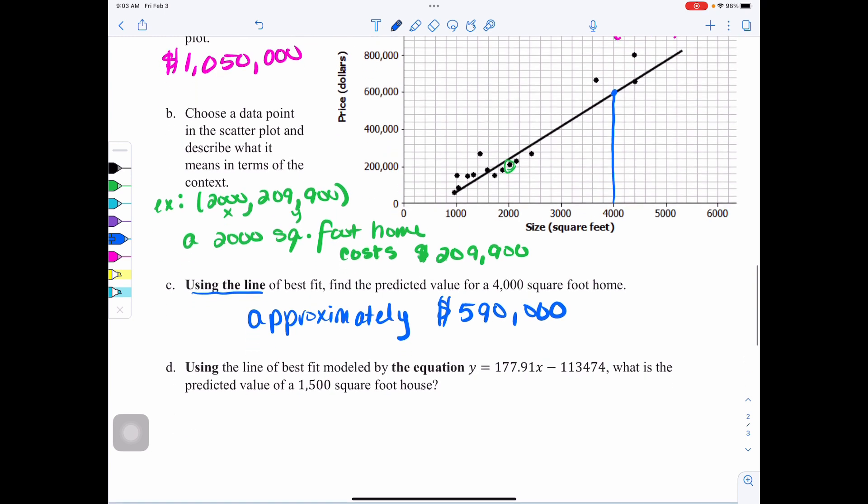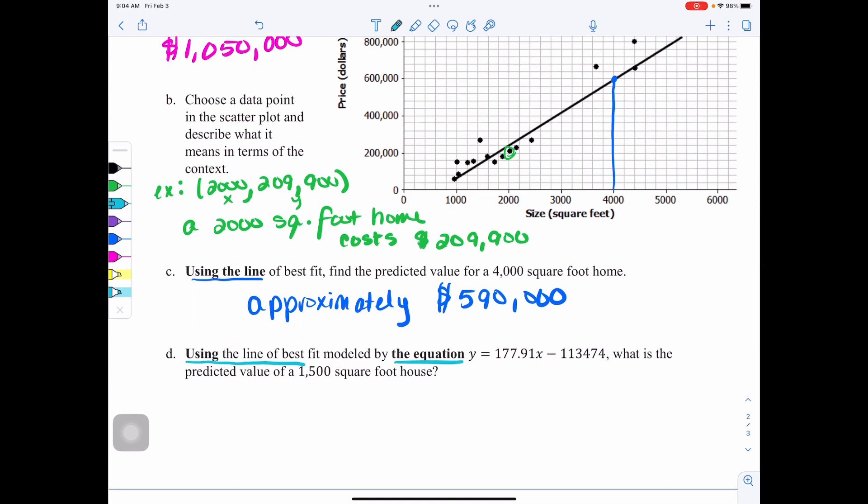Now, if I really want the most accurate, I'm going to go and actually use my line of best fit equation. This time, using the line of best fit equation, the line of best fit modeled by the equation Y equals 177.91X minus 113,474. What is the predicted value? Again, that means use the equation. It's just the predicted, it's not the actual data point. This time, it's for a 1,500 square foot house. If they're talking about the square footage, they're talking about an X value. This is telling me X is 1,500. In my equation, I will replace X with 1,500. Then I'll type that into my calculator. My answer is approximately $153,391.